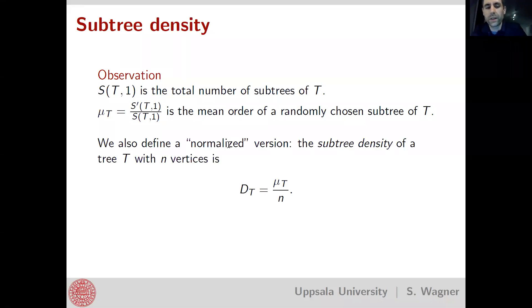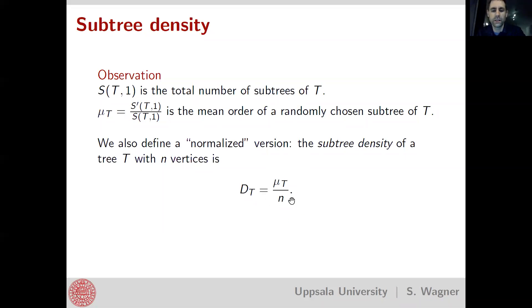One can also define a normalized version called the subtree density, obtained by dividing the mean by the number of vertices in the whole tree. With this normalization, one always gets something between zero and one, since the mean number of vertices of a subtree lies between one and n. And in fact, one can restrict the interval a little further — more about that in a moment.